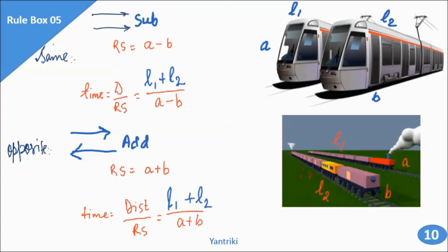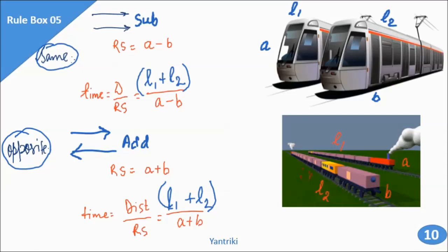Irrespective of whether the trains are moving in same direction or opposite direction, the distance value will always be L1 plus L2. I hope this part is understood. If there's any problem, please let me know in the comment section — write where you are having difficulty and I will try to solve your query.